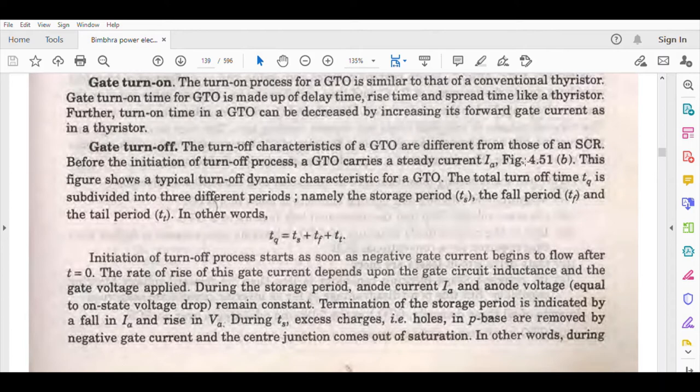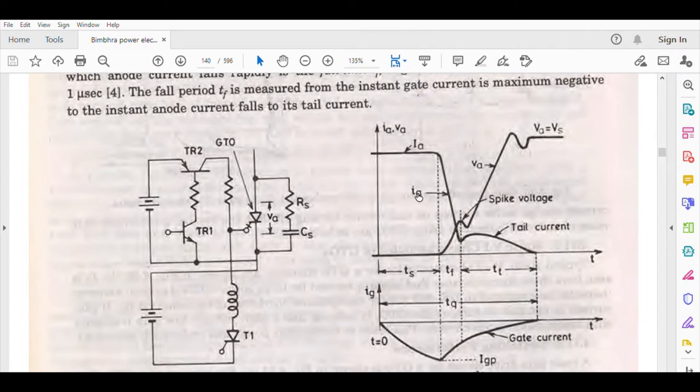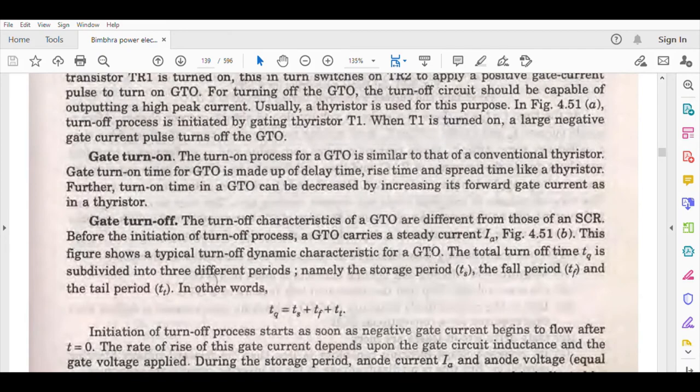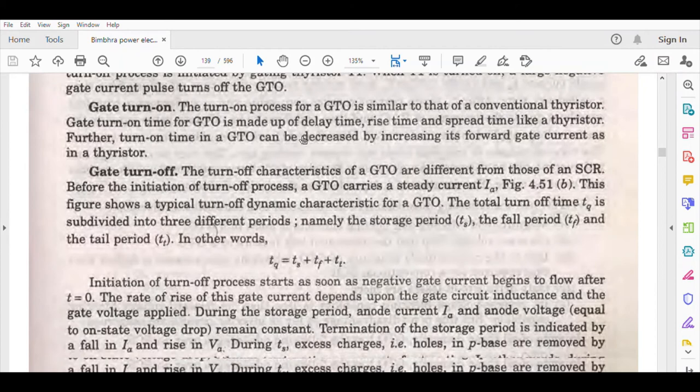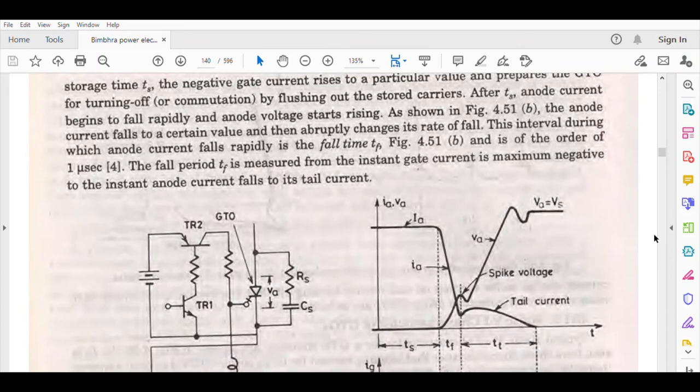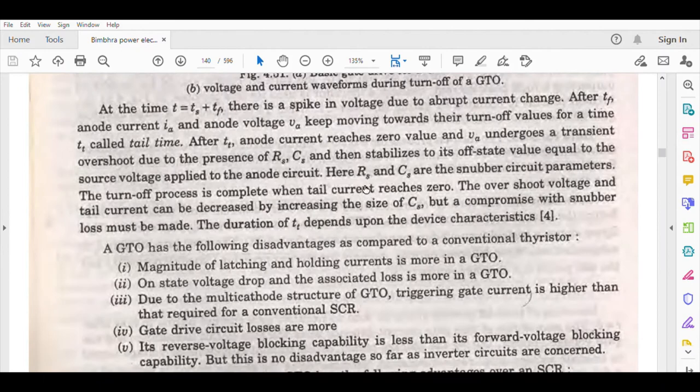Before the initiation of the turn-off process, a GTO carries a steady state current. This figure shows a typical turn-off dynamic characteristic for a GTO. The total turn-off time TQ is divided: TQ equals TS plus TF plus TT - storage period, fall period, and tail period.